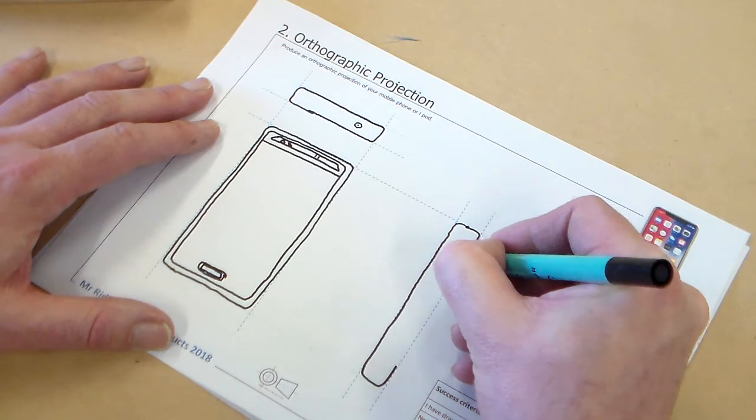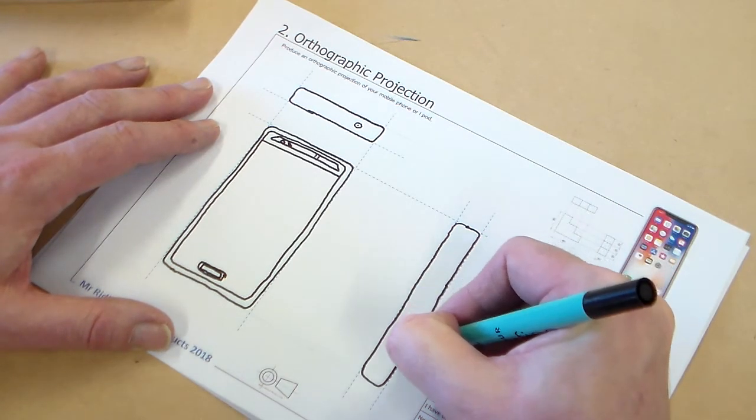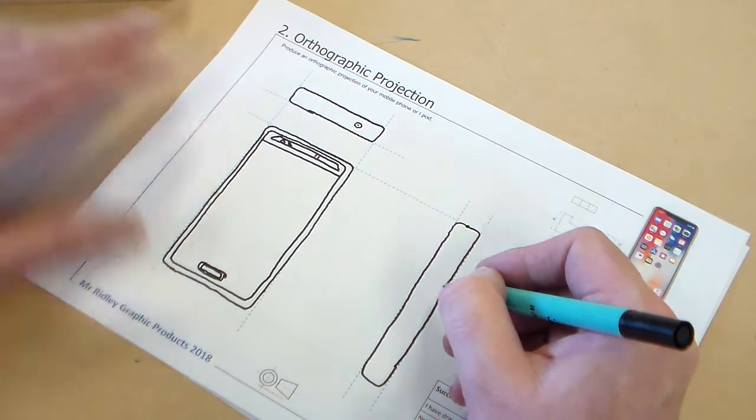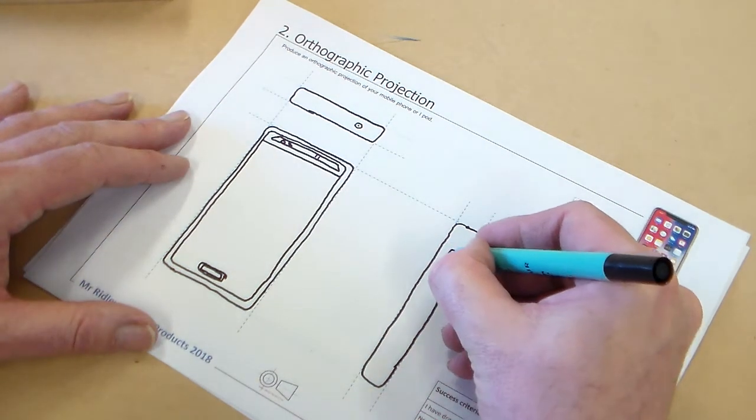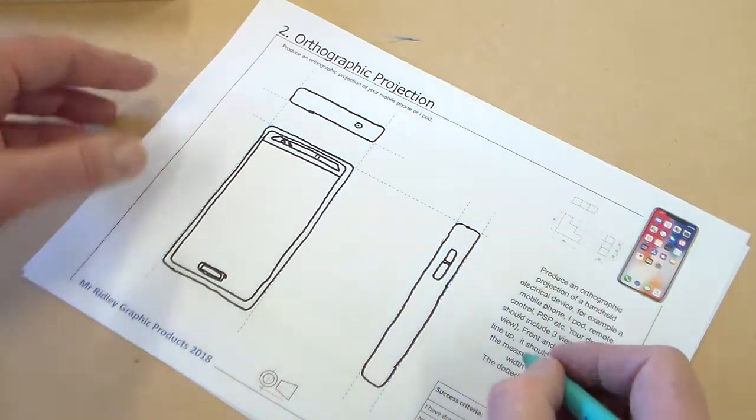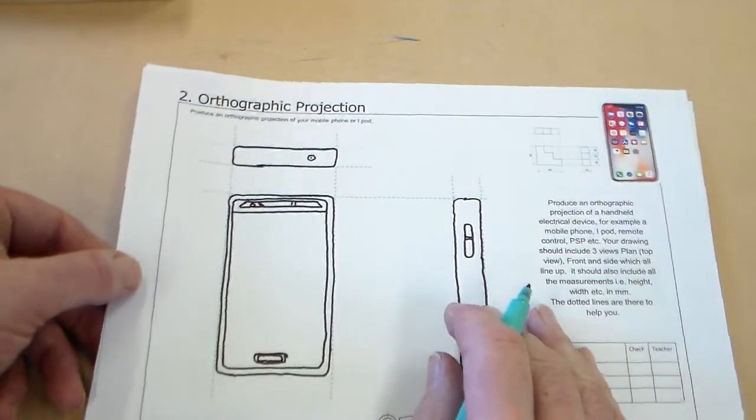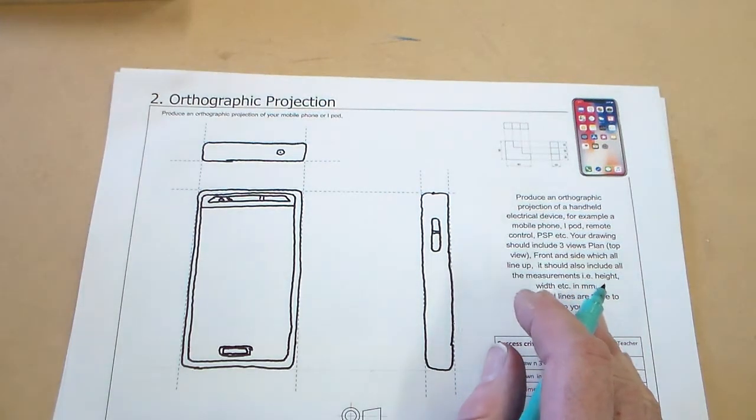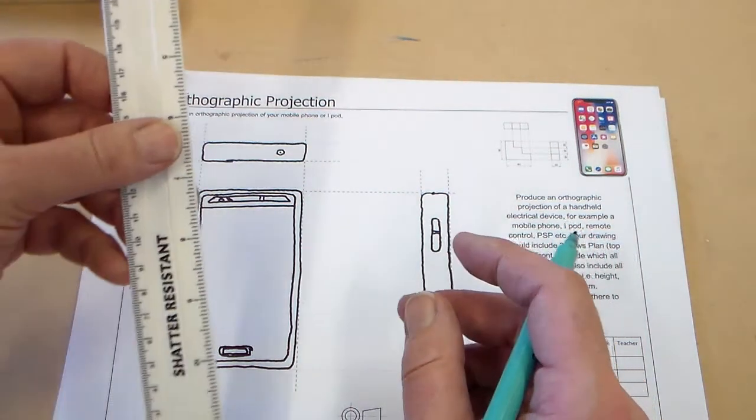I'm going to just draw the side view, and then, what did we say? We saw some buttons. So I think it's a sort of two-part button. You could add some more detail. I'm going to leave it at that, because the last thing I asked to do was add some dimensions to the correct standard.